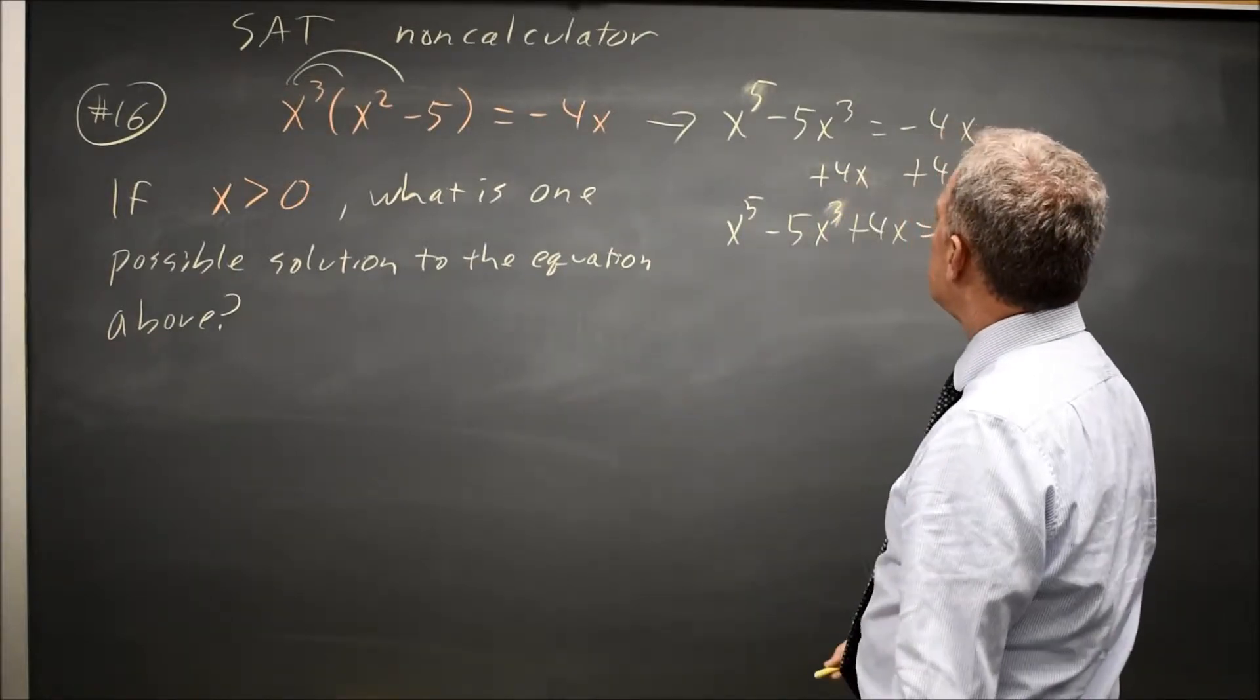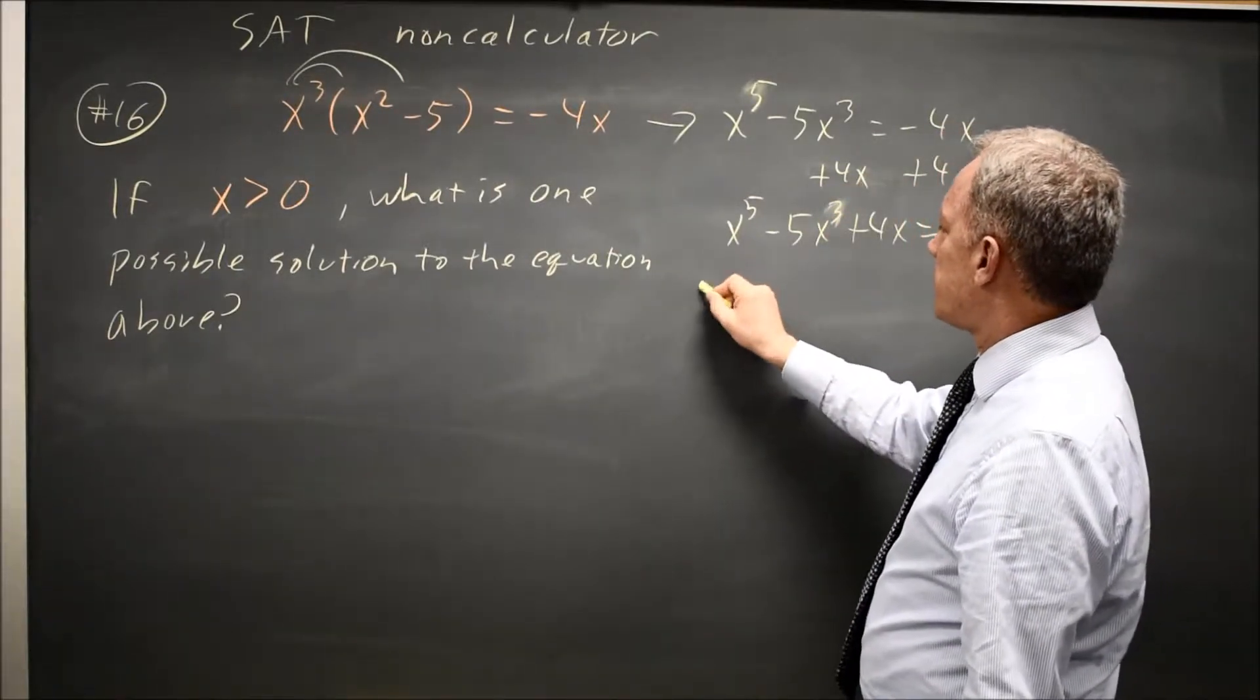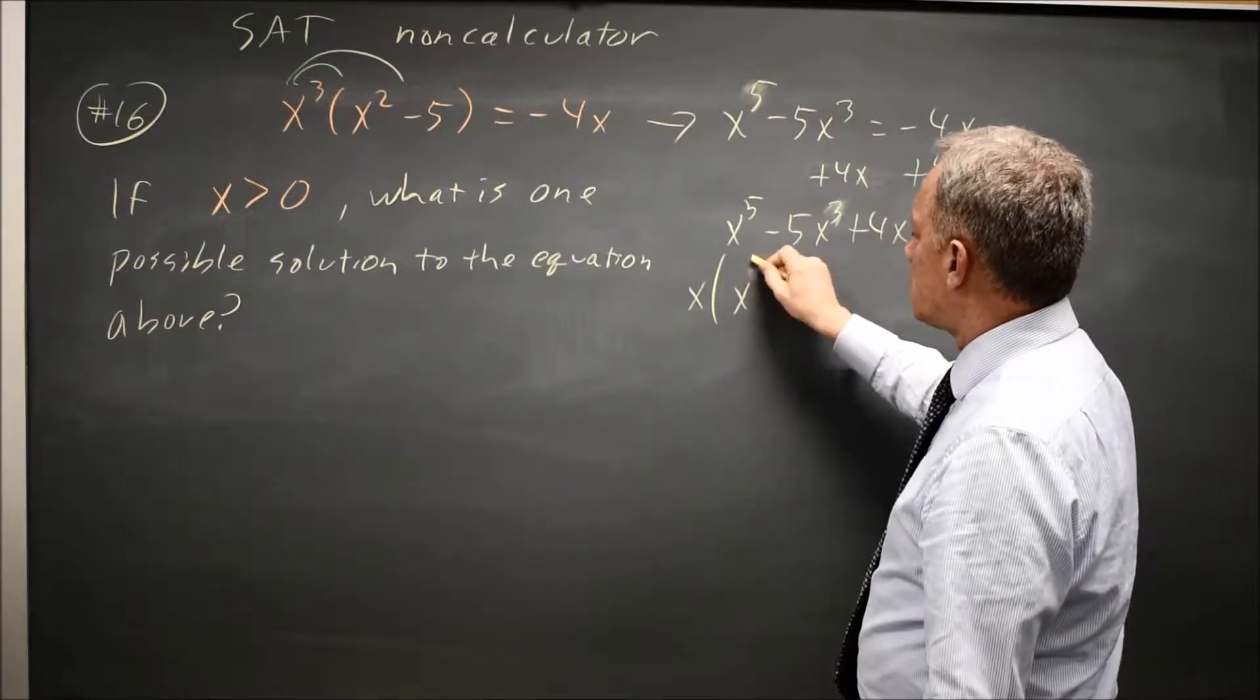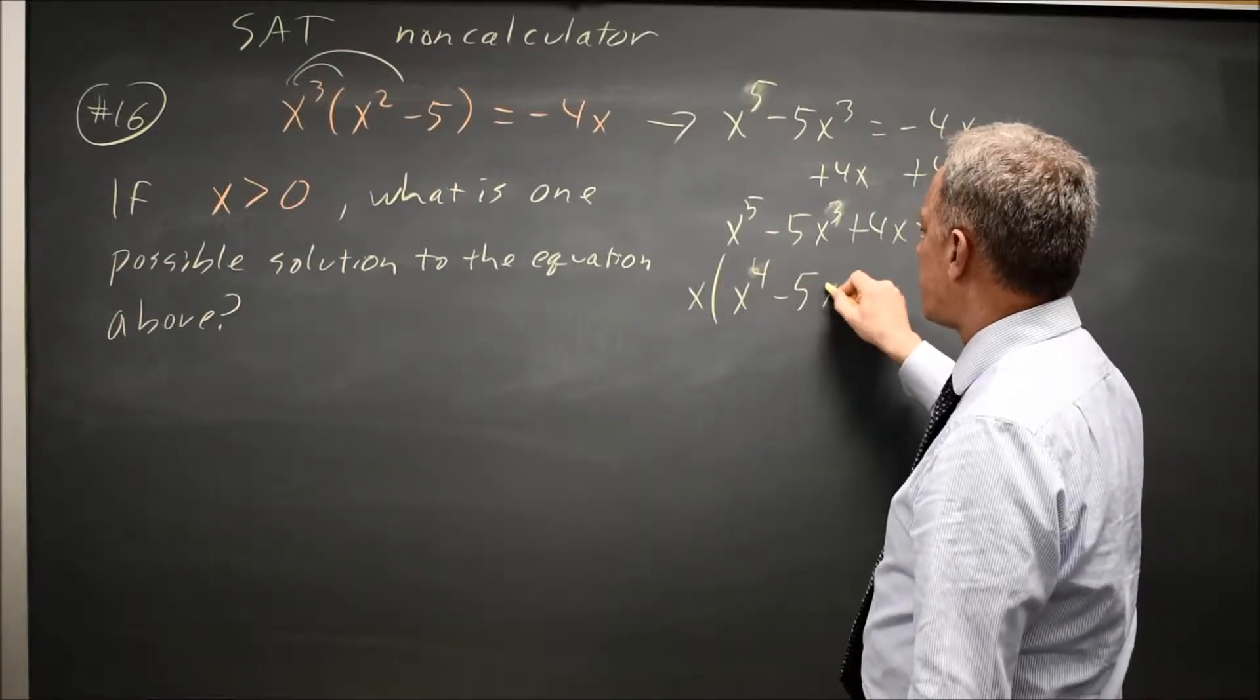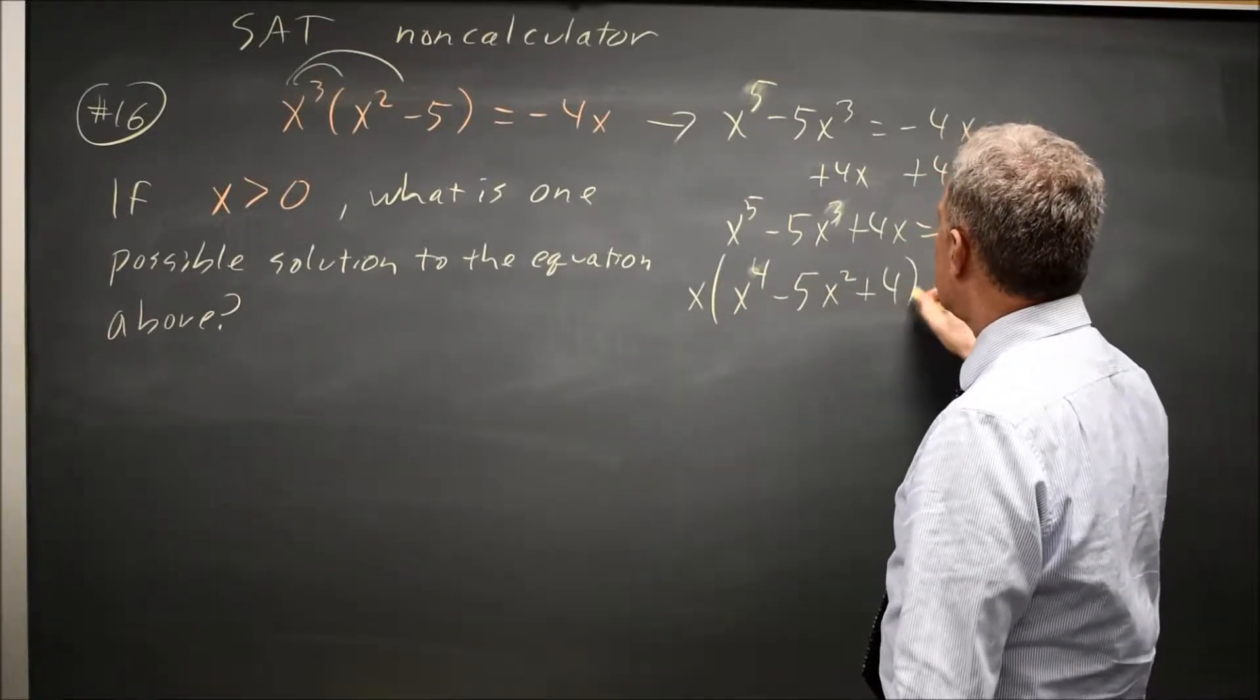That cubed wasn't very neat. I have a common factor of x. I'm going to take that out. x to the fourth minus 5x squared plus 4 equals zero.